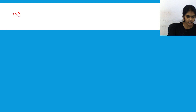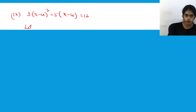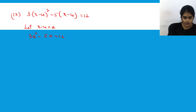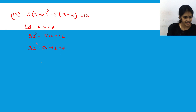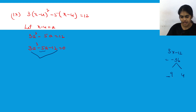Question nine: 3(x - 4)² - 5(x - 4) = 12. Since (x - 4) appears repeatedly, let a = (x - 4). Substituting gives 3a² - 5a = 12, or 3a² - 5a - 12 = 0 in general form. The product of 3 and -12 is -36. We split -36 as -9 and 4, since -9 + 4 = -5 and -9 × 4 = -36.